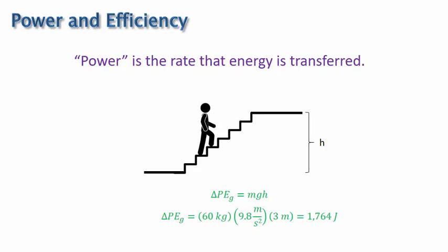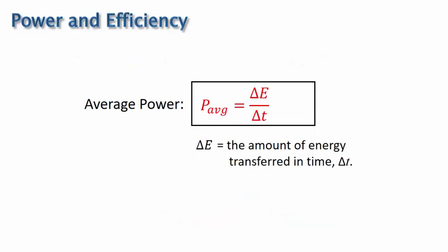The rate that the man obtains this amount of energy is power. We can calculate the average power by the change in energy divided by the change in time, or it can be described as the amount of energy transferred in time delta T. Because work is, by definition, a transfer of energy, this equation is also commonly written as work divided by delta T. The SI unit for power is a watt, where a watt is a joule per second.